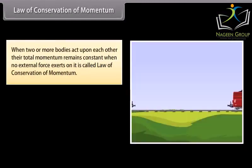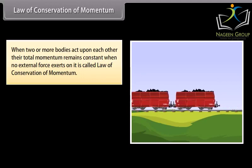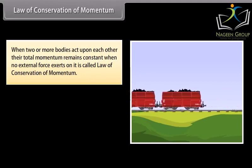When two or more bodies act upon each other, their total momentum remains constant when no external force exerts on it. This is called law of conservation of momentum.